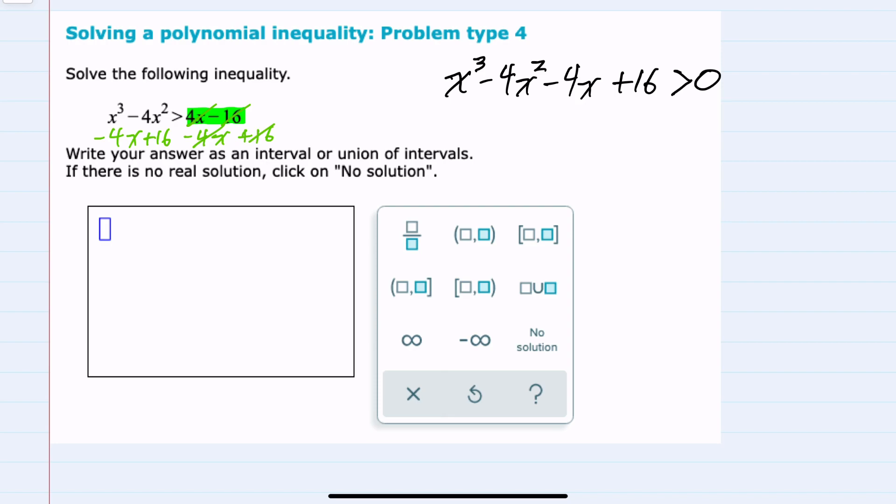Again, unlike previous examples, this is not factored. So in my next step, I will factor the left-hand side. And since I have four terms, I'll try factoring by grouping.